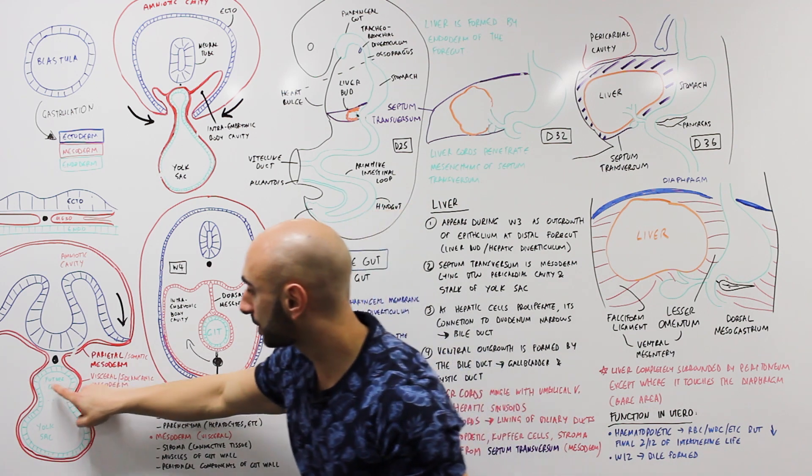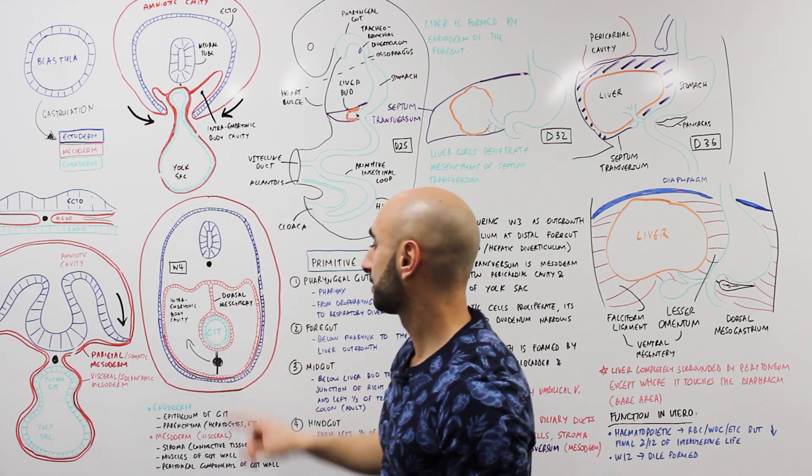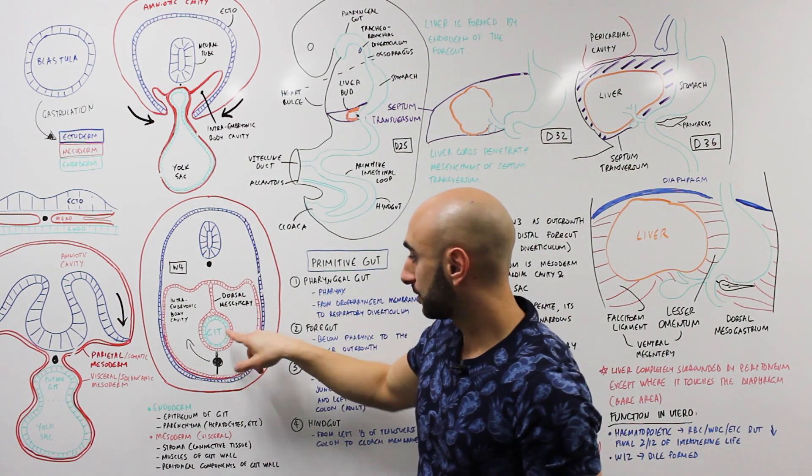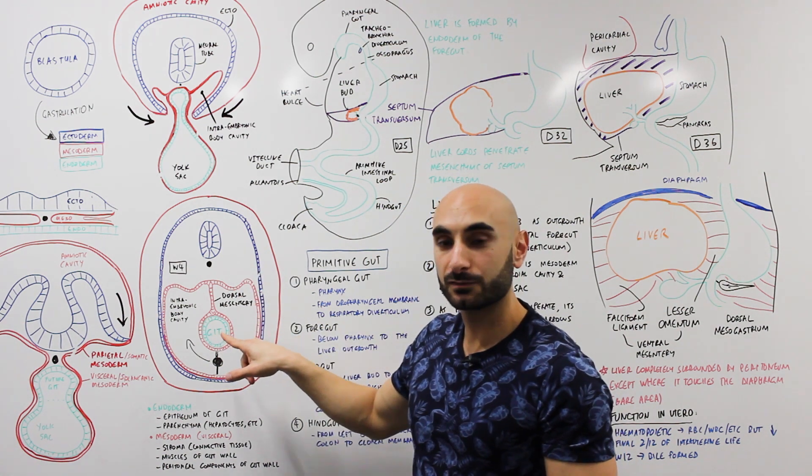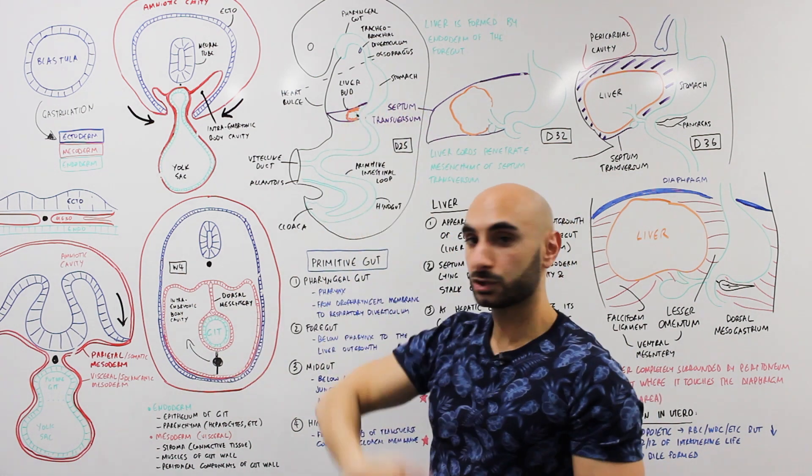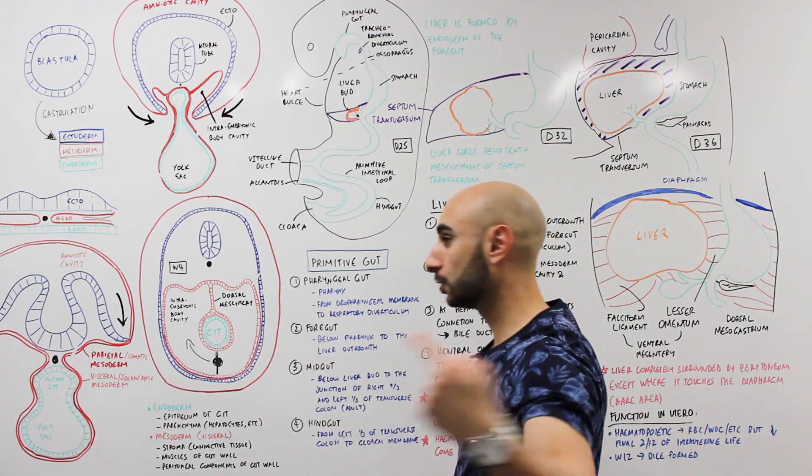Let's focus now on the GIT. So GIT, if we cut it here, that's this view on week 4. If we look at it at day 25 though from a longitudinal section, let's cut it this way.